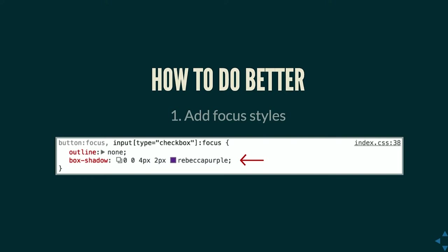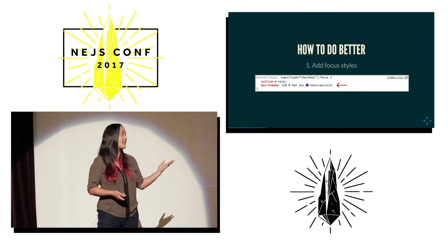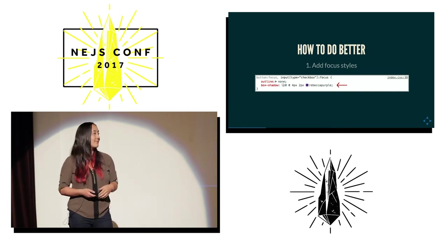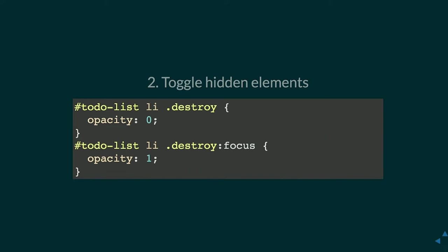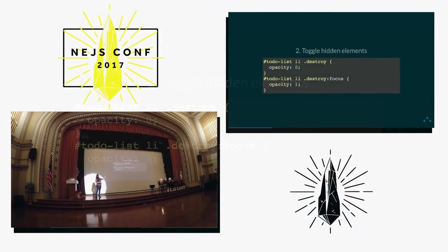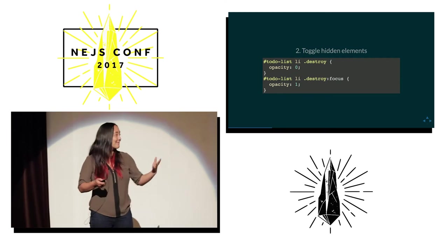They could have done better by targeting focus styles specifically — instead of removing the outline, they could have used box-shadow, a different border color, or different background color. You have tons of options as long as it's obvious and easily viewable. For the delete button, they could have used 'opacity: 0' which does not remove something from the focus order, and then target it with ':focus' to put the opacity back. That means you can focus to it as well as hover — much easier, stays in focus order, you can see it when you tab to it.